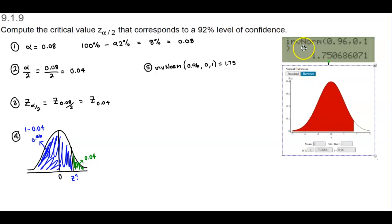Either using INV norm or StatCrunch, we can find that the critical value that corresponds to the 92% level of confidence is approximately 1.75.